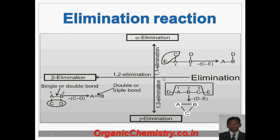The meaning of alpha elimination is: if a compound is A-B-C-D-E type, and two parts are removed from the same position, it is called alpha elimination. For example, if C and E are removed from the same A position, it is called alpha elimination — that is, it is a 1-1 elimination.